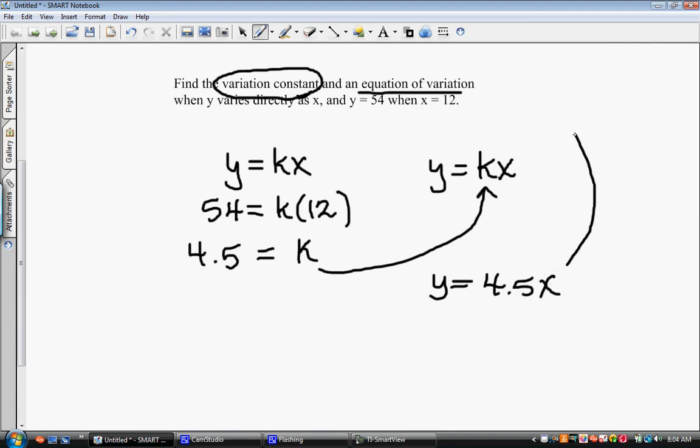Now, in a later problem, they might actually tell us something to do with this equation of variation. But right now, this is all they've asked us for. So these are the two answers. This is the variation constant. This is the equation of variation for that particular problem.